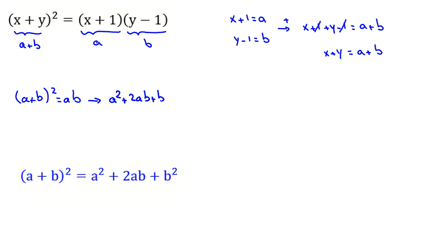If we take ab to the left hand side, or if we subtract ab from both sides, it will be a squared plus ab plus b squared equals zero. Now because I want to use this identity again, I multiply it by 2.